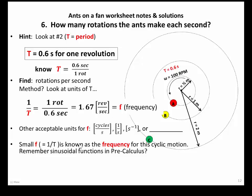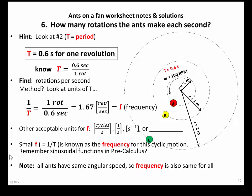Once again, all these ants are riding on the same fan blade moving together at the same rate, so they all have the same period and therefore must also have the same frequency.